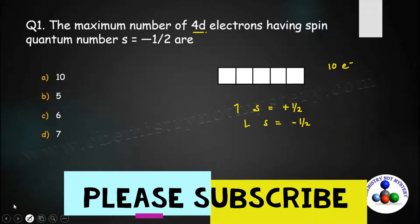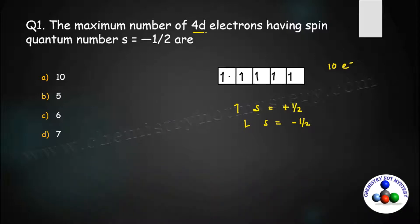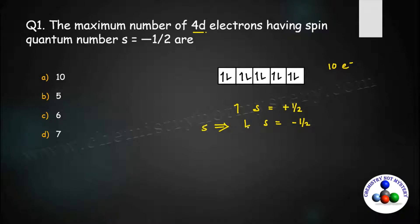When you fill electrons in 4d, you fill them according to Hund's rule: first fill orbitals with single electrons, and after filling all orbitals, you can pair them up. So how many electrons have downward spin? There are 5 electrons with downward spin, meaning 5 electrons with spin quantum number minus half. So option D is the right answer.